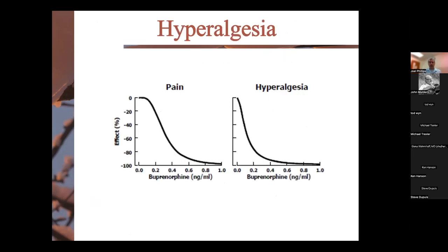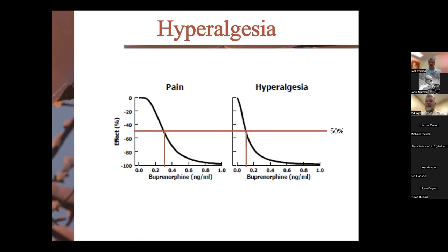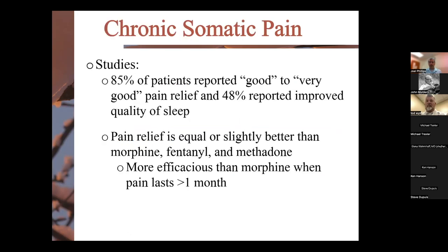Looking at the dose-response curve in terms of serum concentrations versus percent effect: to get 50% effect for pain control, serum concentrations of buprenorphine are about 0.3, but about 0.2 for hyperalgesia. So keep that in mind — for patients with neuropathic pain, hyperalgesia, or central pain, a little bit of buprenorphine can go a long way.